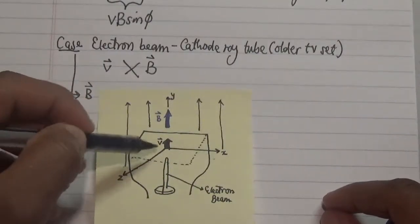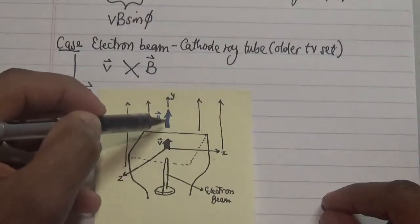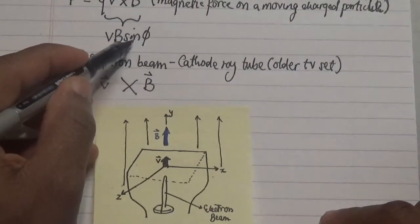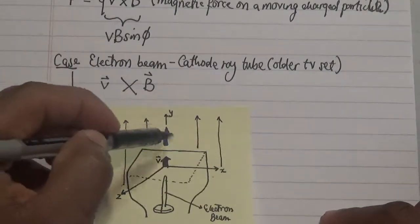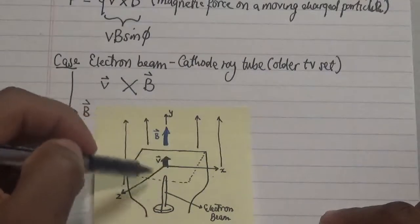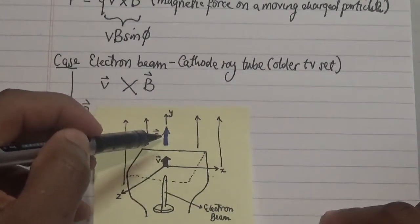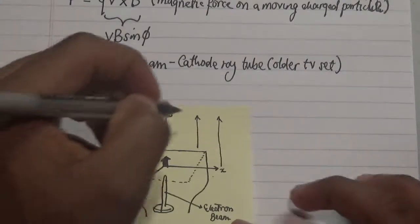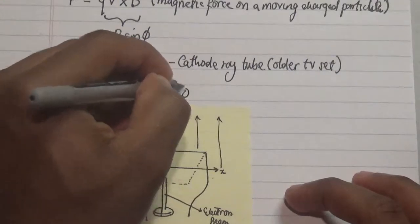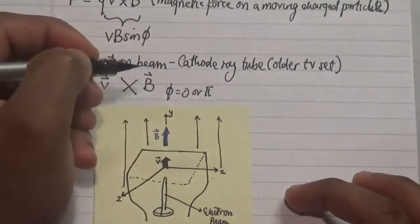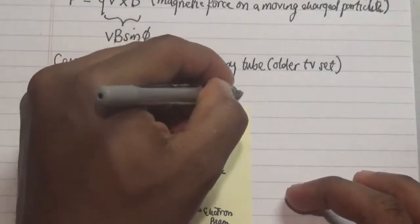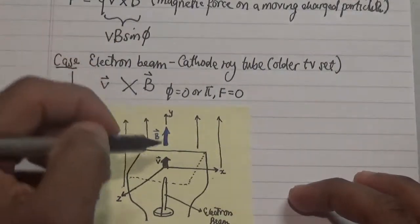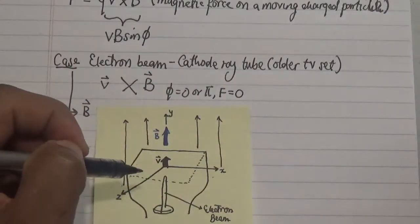We have two vectors that are parallel in the y-coordinate. Performing the cross product, sine of zero equals zero, so we have zero force. When the electron beam moves in the same direction as the magnetic field — at angle θ = 0, or anti-parallel at θ = π — there is zero force and therefore no deflection on our electron beam.